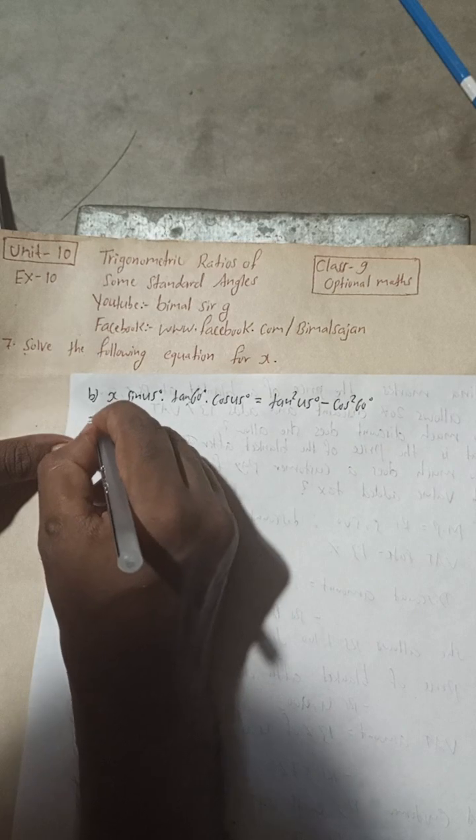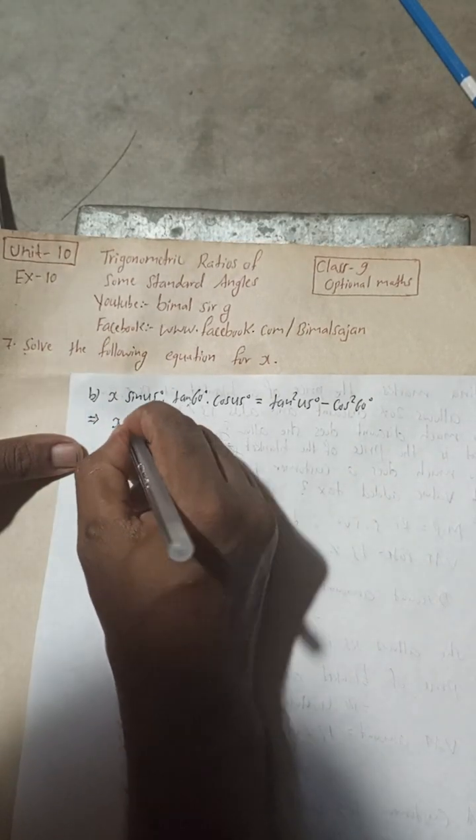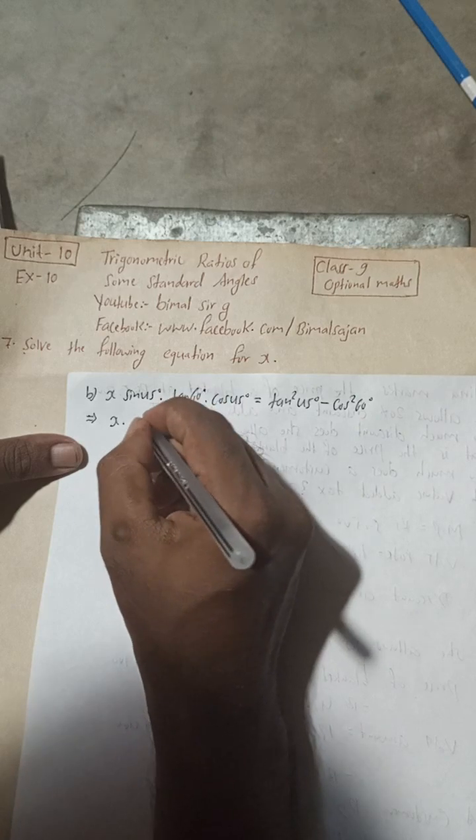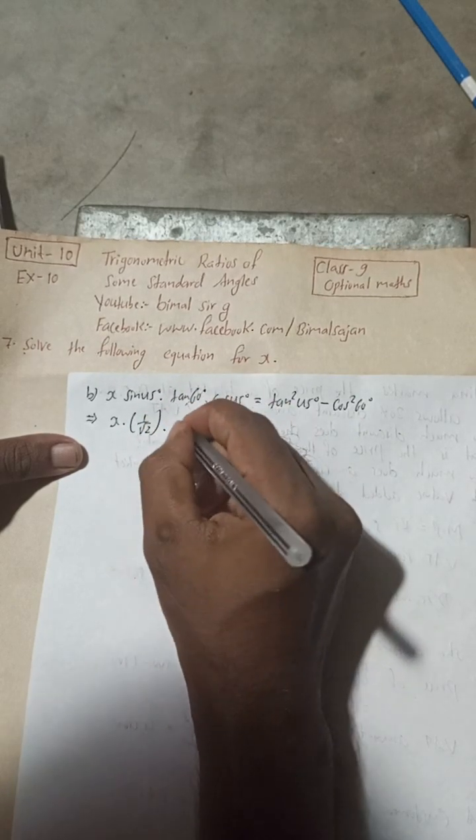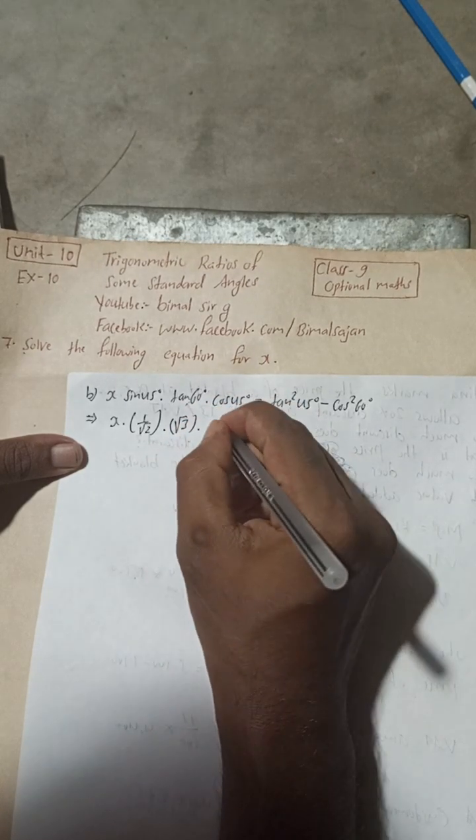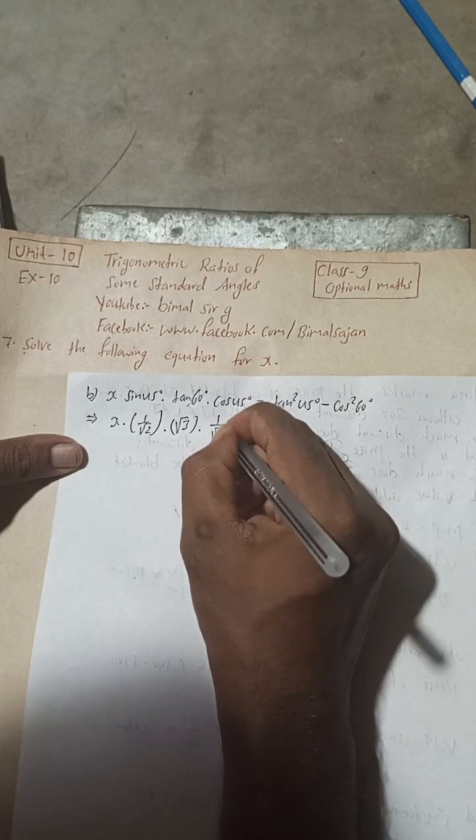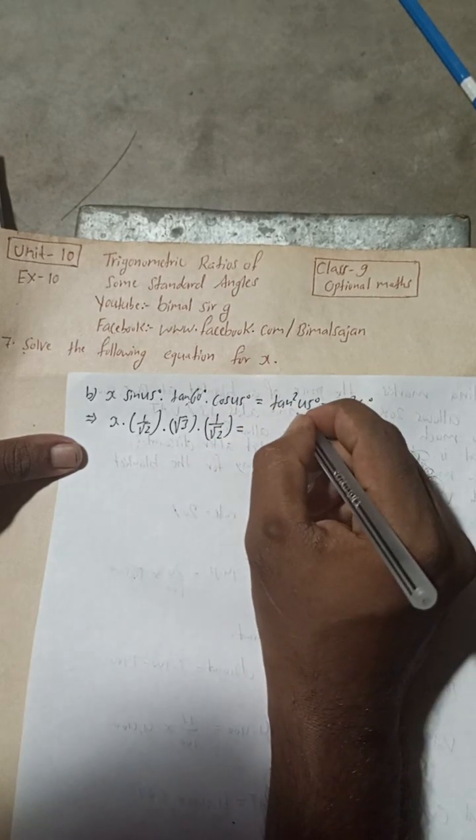I will not write solution, just I will write it implies. This is here x, so keep it x into sin 45 degree will be 1 by root 2 into tan 60 will be root 3 and then cos 45 is again 1 by root 2